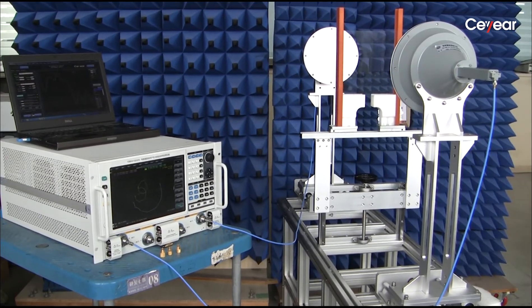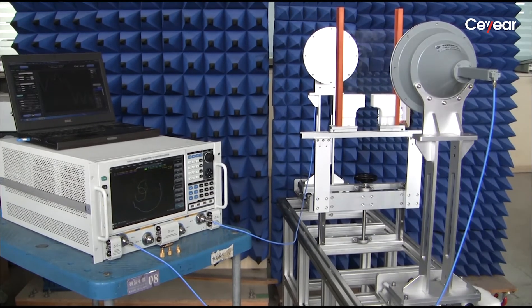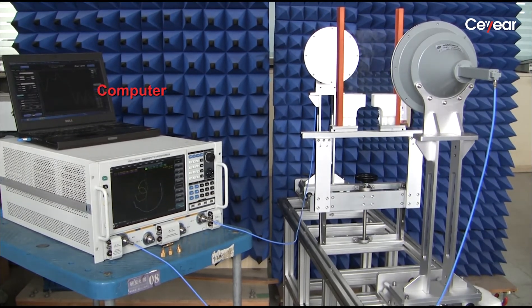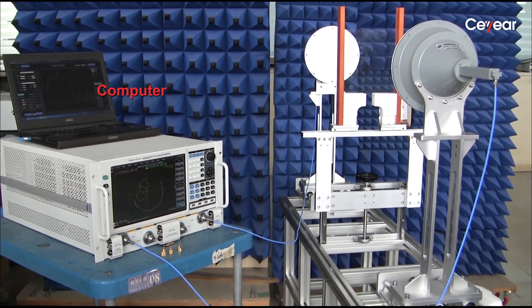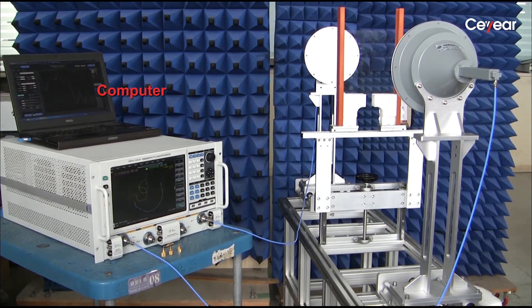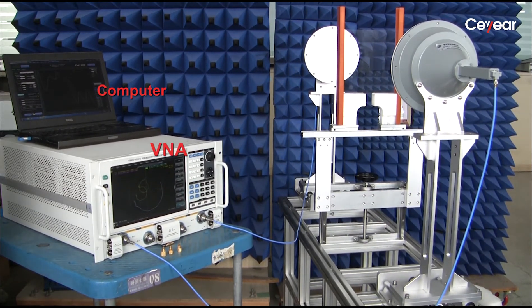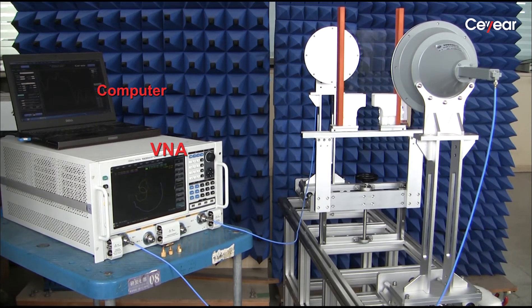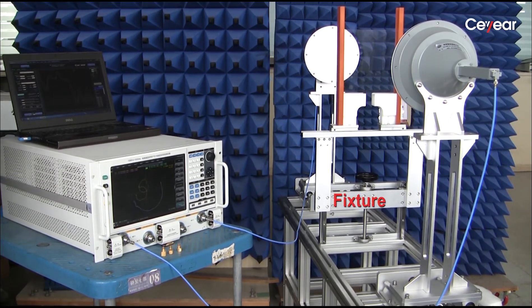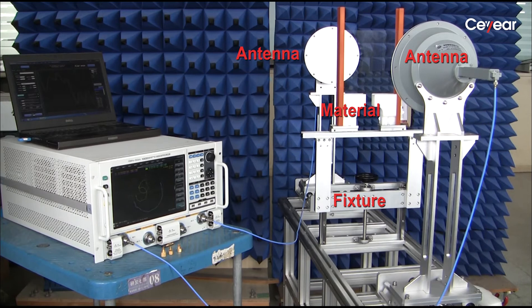This is a typical system setup. The additional computer can help to analyze, save, and print these data for further process, the high-performance vector network analyzer, and the fixture. It can hold the antennas and the material board in a line.